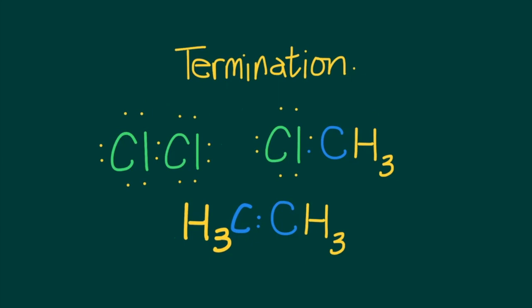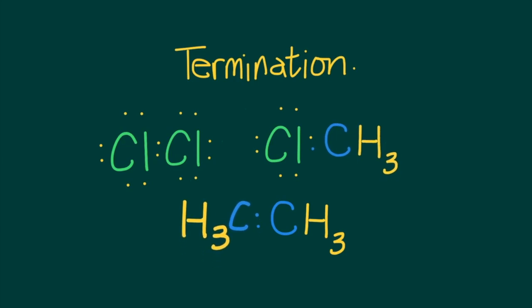Once the concentration of the hydrocarbon begins to drop, then the chlorine free radicals would join to other chlorine free radicals. Whatever remaining CH3s you have would join to chlorines, and some CH3s would join to other CH3s. This is termination.